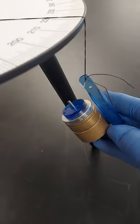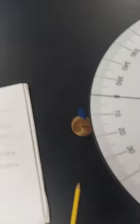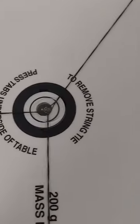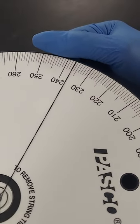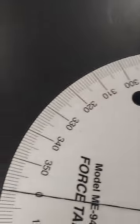which looks like this on my mass hanger. And the angle that I got was 237 degrees. So I'm going to move this to 237 degrees.